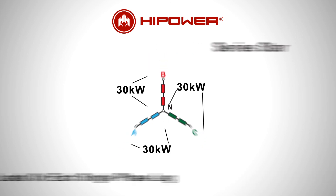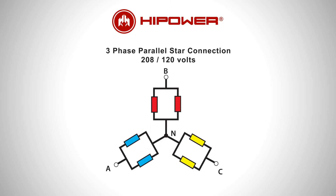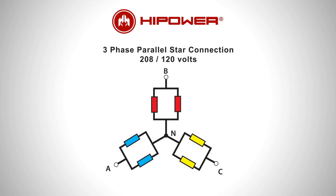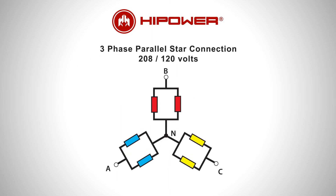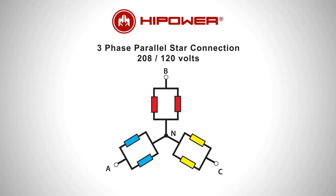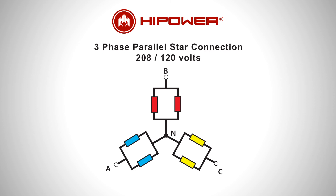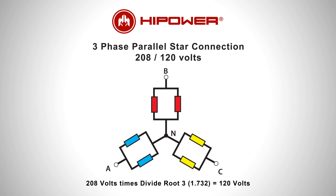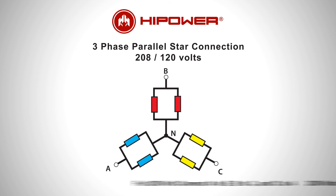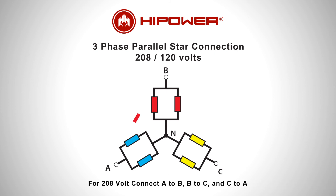A typical three-phase generator connected in a parallel star three-phase 120/208 volt arrangement allows for the connection of single and three-phase motor loads. The relationship between the higher and lower voltage is root 3. For 208 volts, connect A to B.